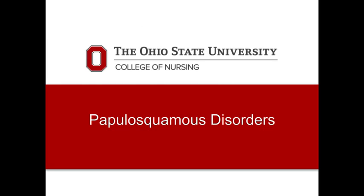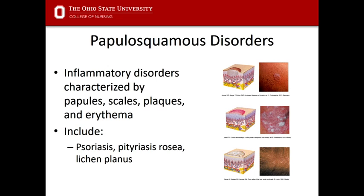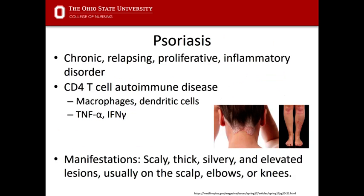Moving on to papulosquamous disorders. These are characterized by papules, scales, plaques, and erythema. Papulosquamous disorders include psoriasis, pityriasis rosea, and lichen planus. We're really going to focus on psoriasis and pityriasis rosea.